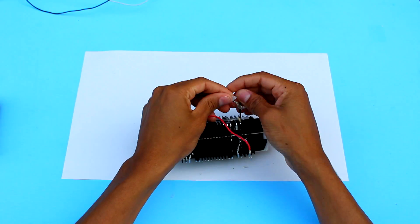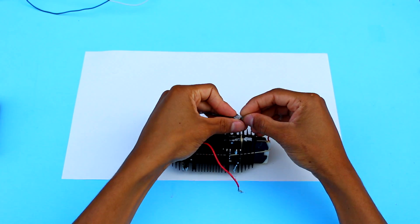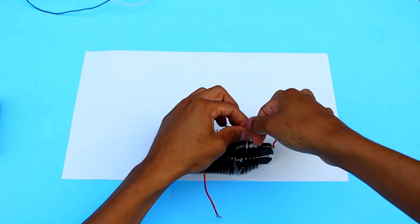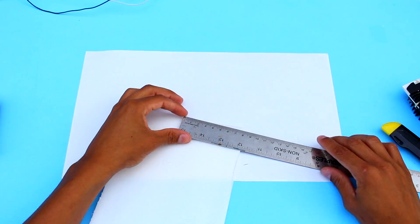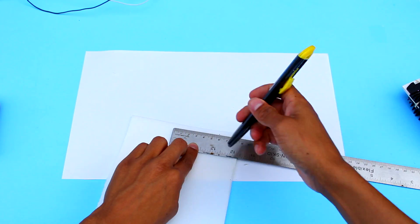After holding them in with elastics, I'm going to wire them together, positive to positive, negative to negative. Now, I'm going to cut out a base for them.